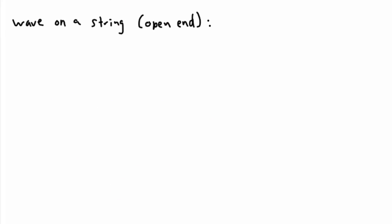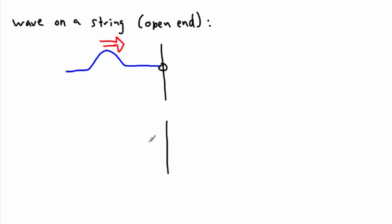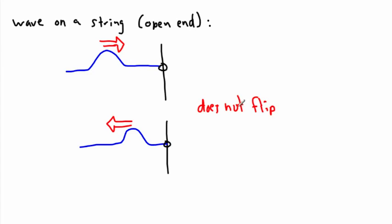Now what if we have a wave on a string with an open end? This time, the string is free to move — maybe there's a ring that allows the string to slide up and down a pole. As the wave comes in, afterwards it's going to come back, but in the same orientation. So it doesn't flip. At an open end, the wave reflects but does not flip.